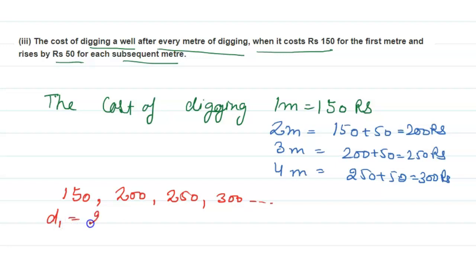The difference between the first two terms is 200 minus 150, which equals 50 rupees. The difference between the second and third term is 250 minus 200, which equals 50 rupees. You can see that the difference between the terms is the same, so this series is in AP. The answer is yes.